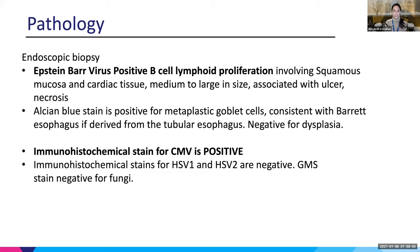This is what the path showed, which is quite interesting. They showed Epstein-Barr virus positive B-cell lymphoid proliferation, and also showed evidence of Barrett's esophagus with metaplastic goblet cells involving squamous mucosa and gastric cardia. It was CMV positive, and HSV and GMS were both negative.